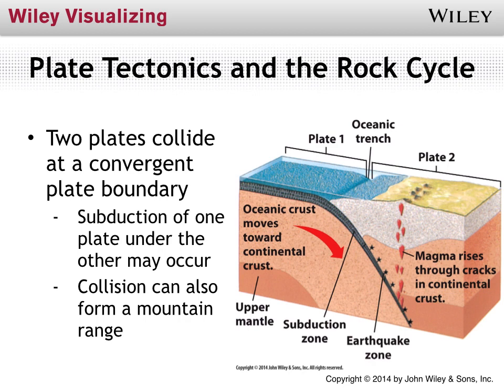When we have two plates colliding or pushing against each other, we have what's called a convergent plate boundary. Typically there are two ways this can occur. Subduction is where one plate is being pushed towards and actually under the other one. What that can result in is an uplifting and the creation of mountain ranges. So sometime in the past, when a plate boundary like this was moving rapidly, a mountain range could have been formed — and it might still be building now, maybe just growing millimeters a year.